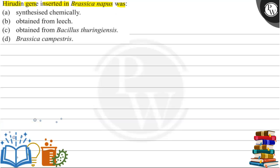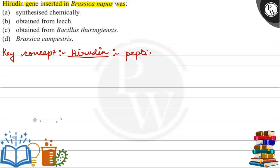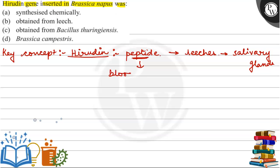Let's start the discussion. The key concept here is the Hirudin gene. Hirudin is basically a peptide — it is naturally occurring. It is found in blood-sucking leeches, specifically in the salivary gland of leeches.